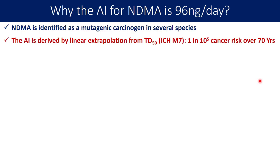For example, if you start your study with 60 number of species, and you keep dosing the substance according to the protocol, you need to identify what is the exposure or concentration that can result in a tumour in 30 of those species — and that concentration becomes your TD50.